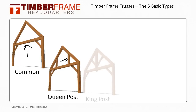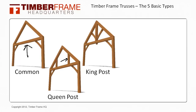The third truss design is the king post truss. The post dividing the gabled space is known as the king post, and it is a bold and intriguing design that is commonly used in conjunction with other truss styles. It also often incorporates two struts on either side that not only adds strength, but character.